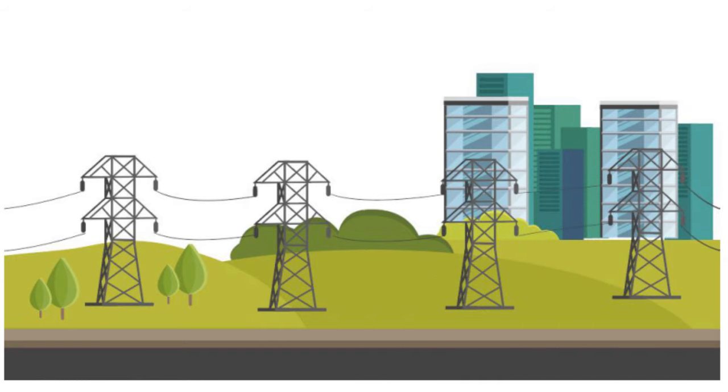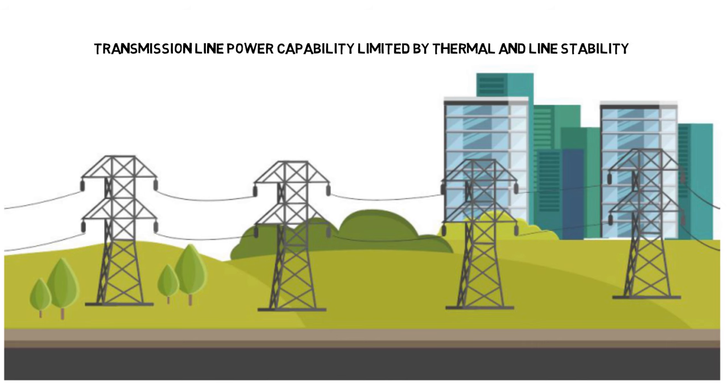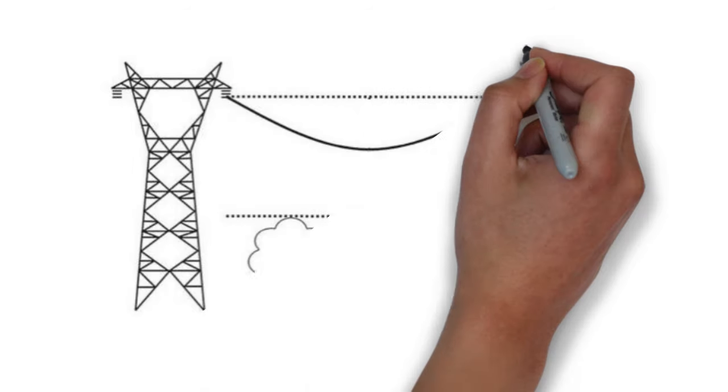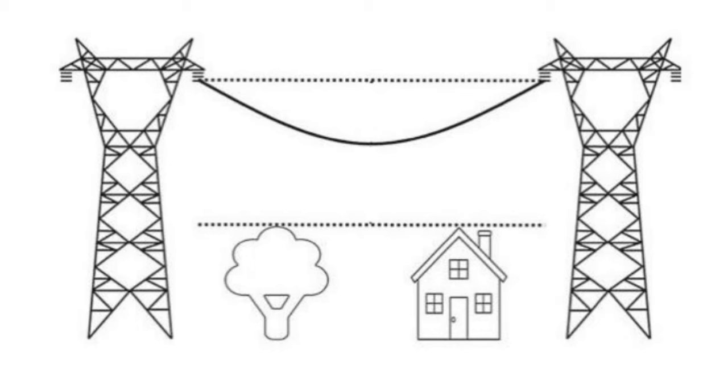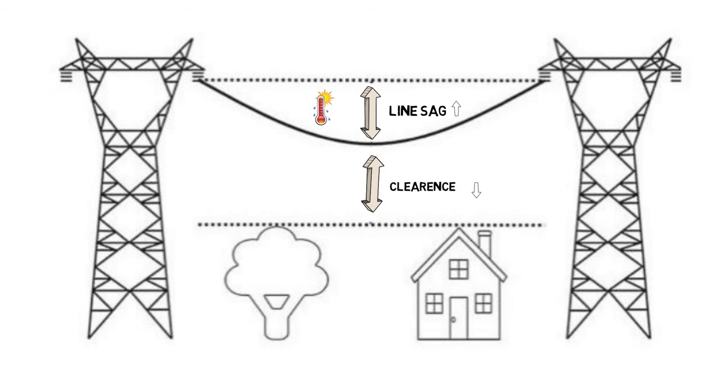Power capability of a transmission line is limited by the thermal loading and stability limit. An increase in conductor temperature caused by real power loss can stretch the conductors and increase the sag between transmission line towers consequently reducing the clearance distance.